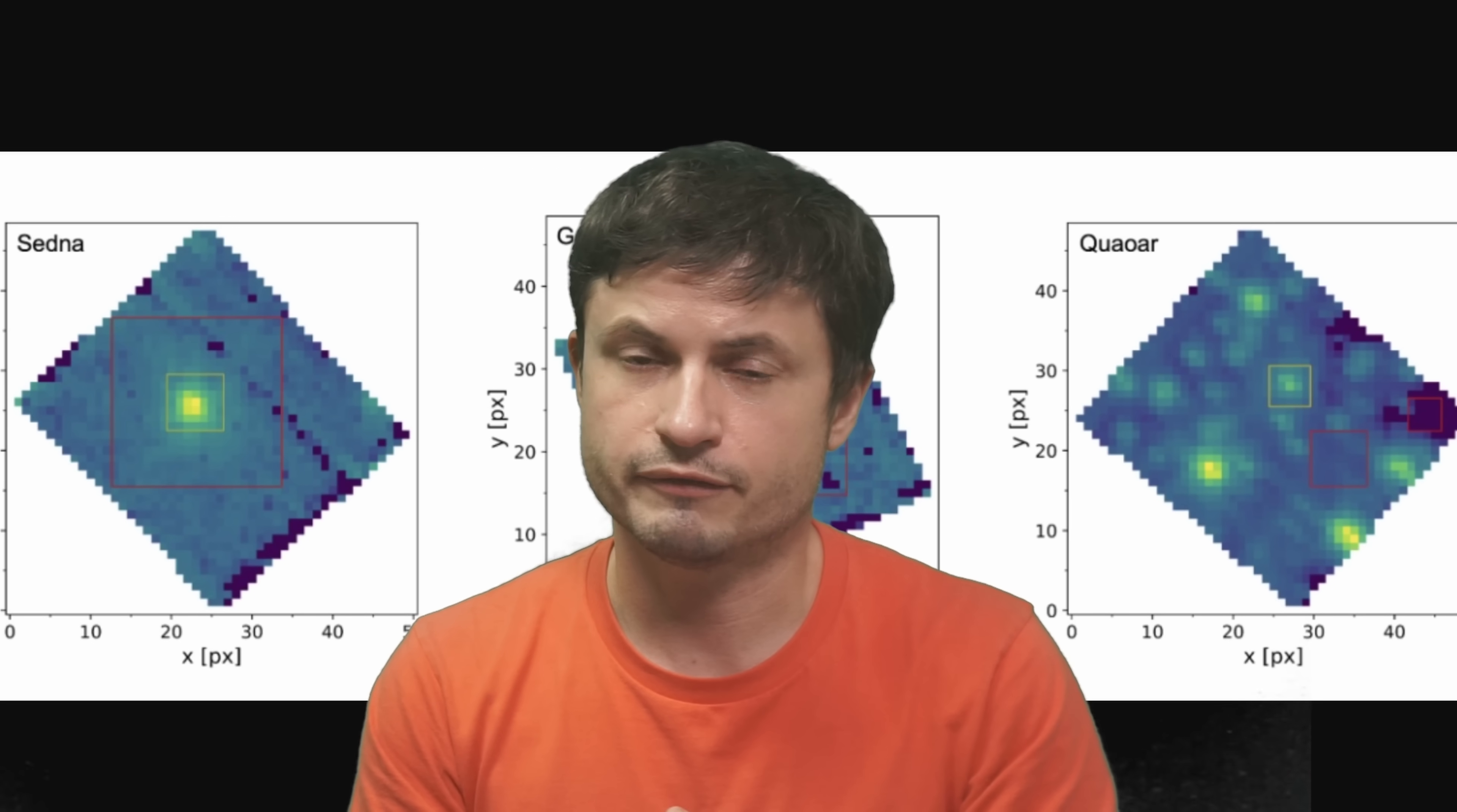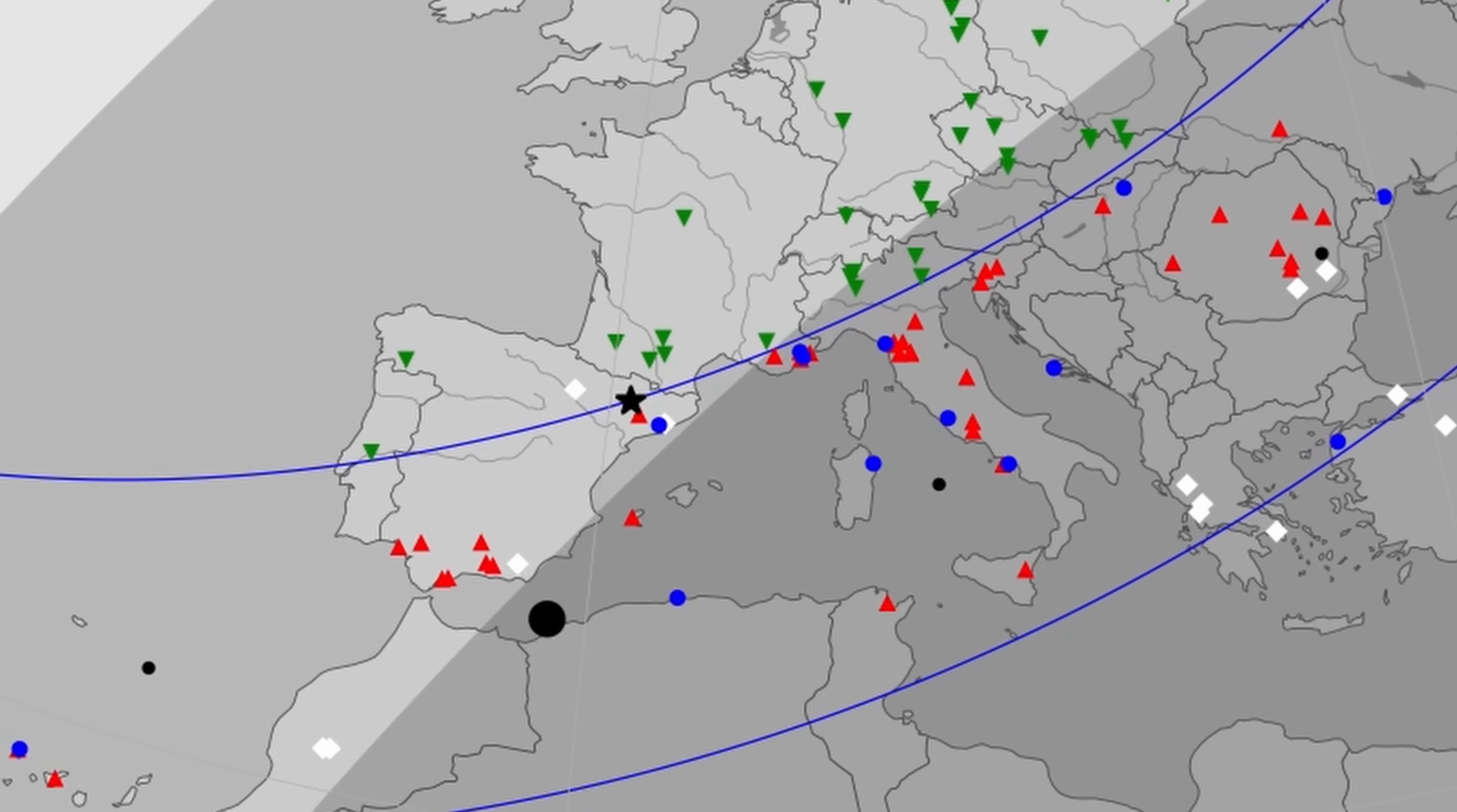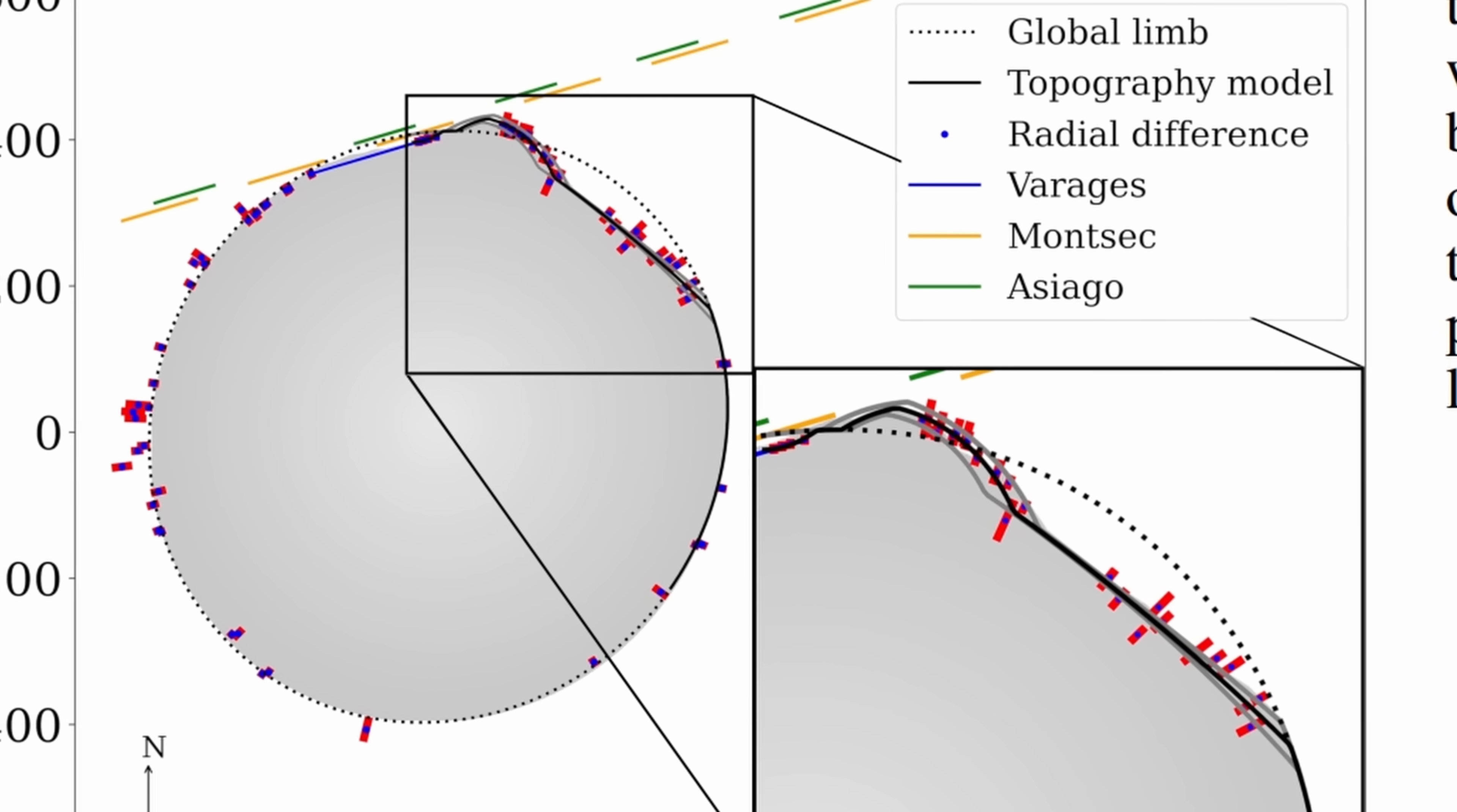And last but not least, we have another announcement from the object referred to as 2002 MS4. And here, by observing this asteroid through the process of occultation of various stars, basically when the stars pass in front of the asteroid, with this being done several times from several locations, the team discovered that this asteroid seems to have an extremely large depression, potentially from some kind of an impact, 45 kilometers deep, and also about 320 kilometers across.